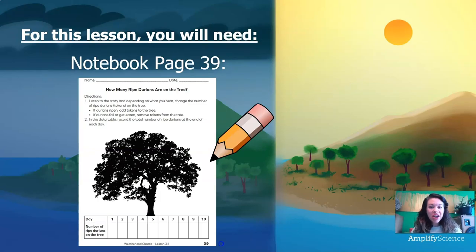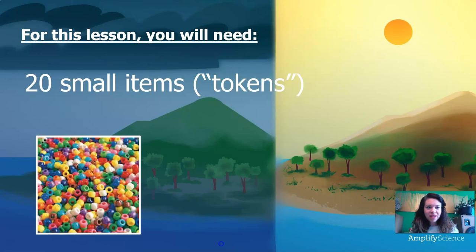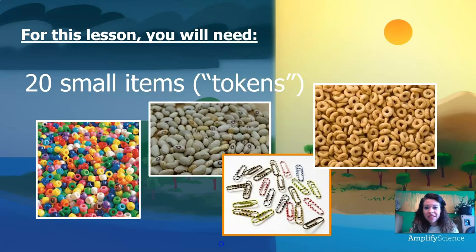For this lesson, you will need notebook page 39, so find this page. You'll also need something to write with, like a pen or a pencil. You will also need 20 small items — the activity calls them tokens, but you can use anything you have laying around your house. You could use beads, beans, paperclips, or even pieces of cereal — anything small enough that you can fit 20 of them onto the page. Other than that, just be ready to be curious and do some awesome science.